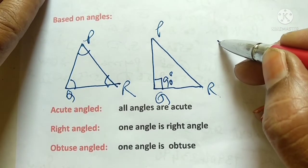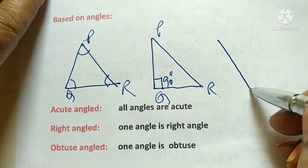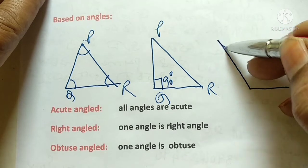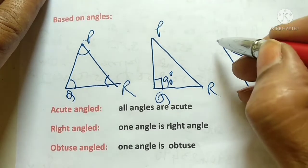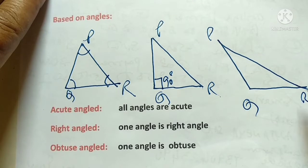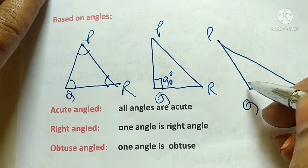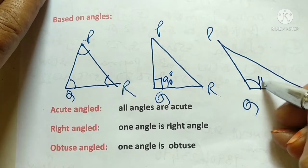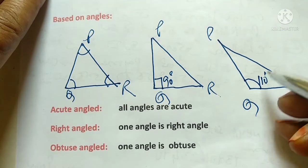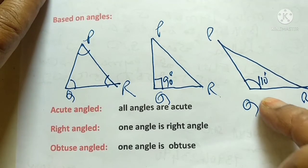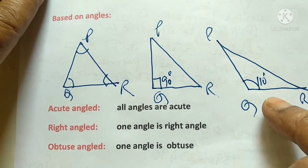The third type is the obtuse triangle, where one angle is more than 90 degrees. We draw triangle PQR. Look at angle PQR — it is more than 90 degrees, for example 110 degrees. So this is called an obtuse angle triangle.